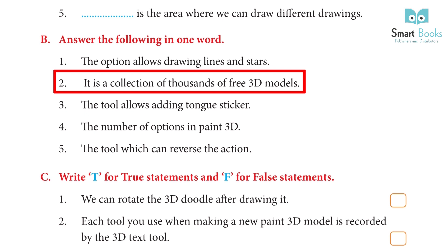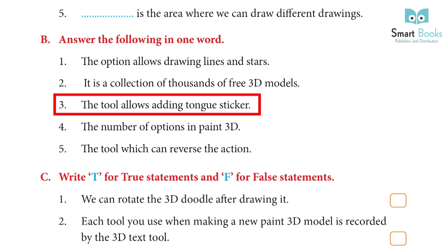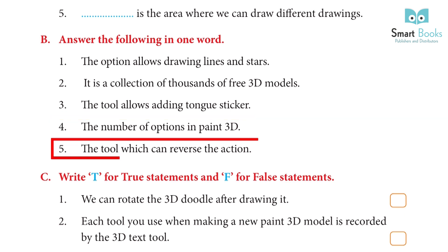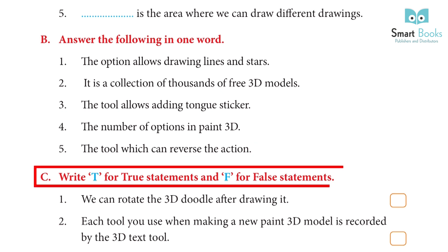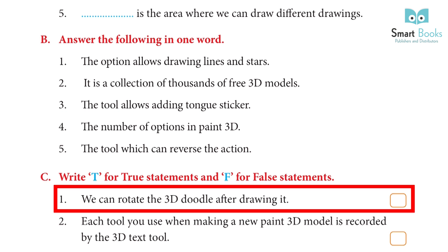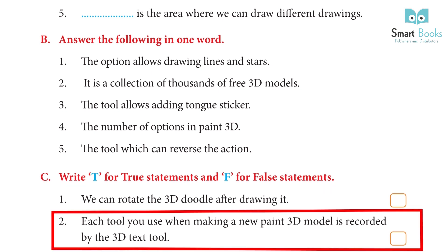2. It is a collection of thousands of free 3D models. Answer: 3D Library. 3. The tool that allows adding tongue stickers. Answer: Stickers. 4. The number of options in Paint 3D. Answer: 3D Library. 5. The tool which can reverse the action. Answer: Z axis position tool. C. Write T for true statements and F for false statements. 1. We can rotate the 3D doodle after drawing it. Answer: True. 2. Each tool you use when making a new Paint 3D model is recorded by the 3D text tool. Answer: False.